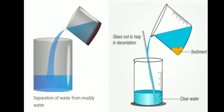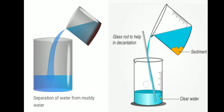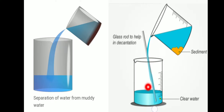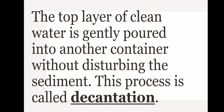Separation of water from muddy water — you can see here the sediments which have settled down and the supernatant liquid above. The clear liquid is gently poured into another container. With the help of a glass rod, the clear supernatant liquid is poured into another beaker. This process is known as decantation — the top layer of clean water is gently poured into another container without disturbing the sediment.